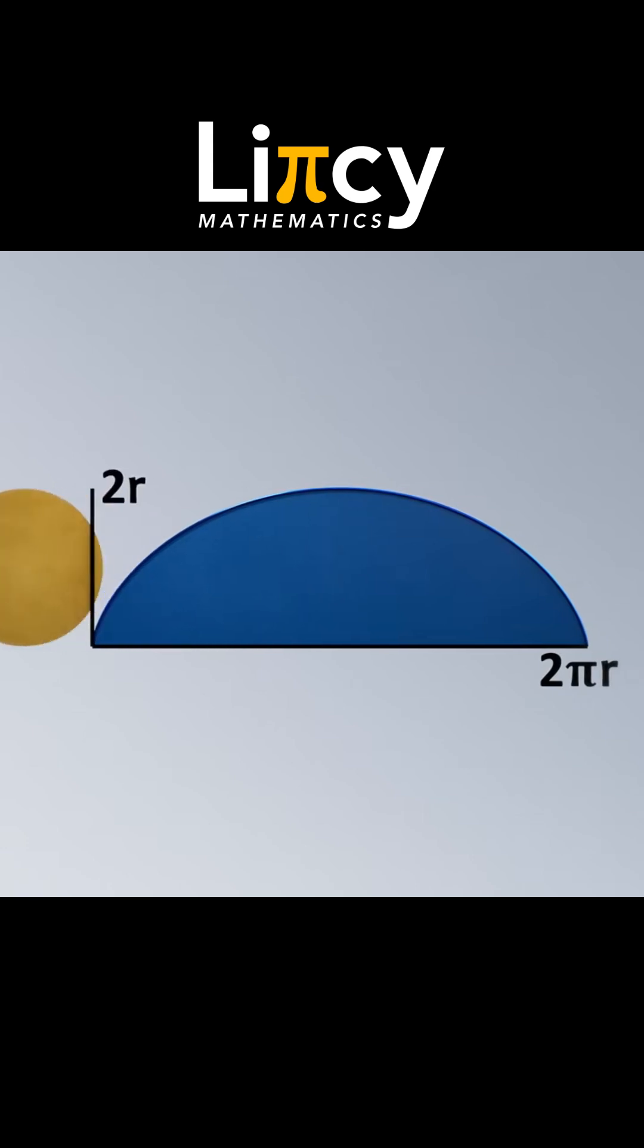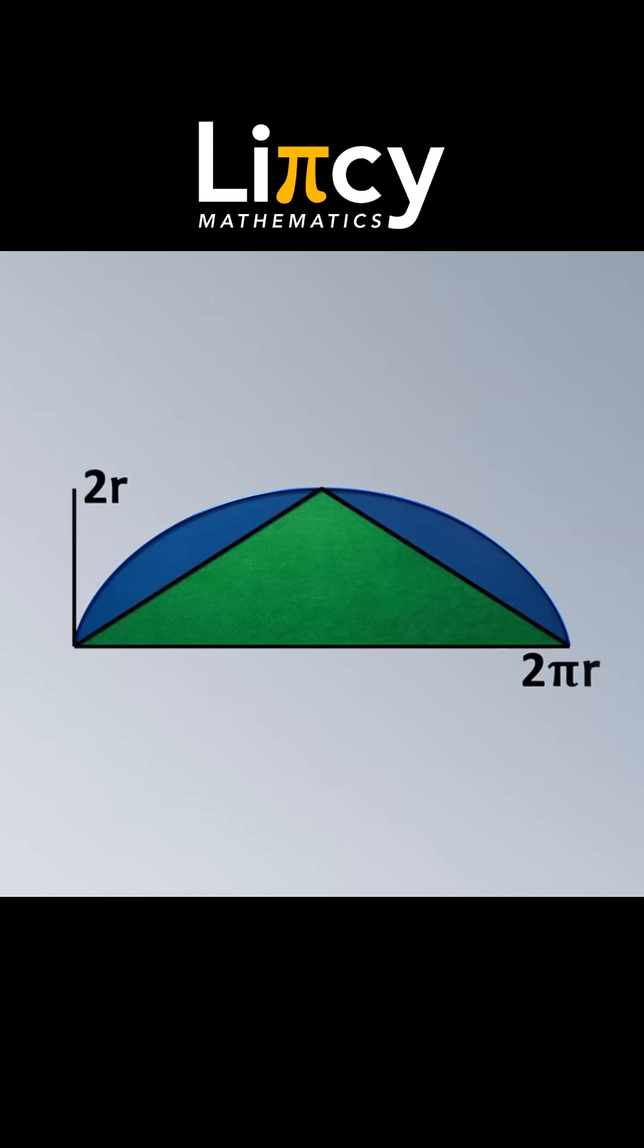We can measure a circumference in terms of the circle's radius. It takes just a little more than 6 radii to stretch along the circumference. More precisely, 2 pi radii. The height of the shape is the same as the height of the wheel, which would be 2 radii.